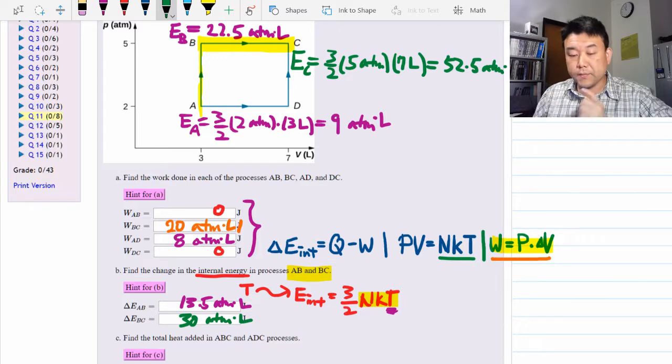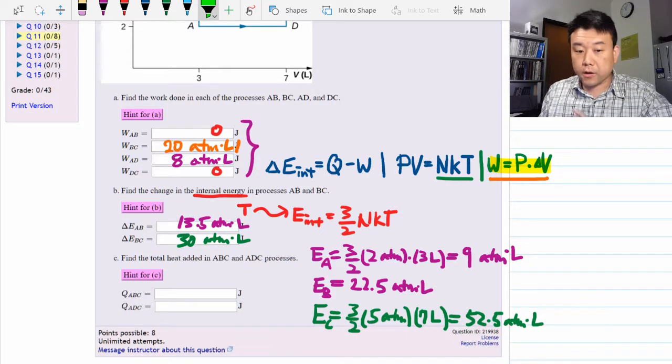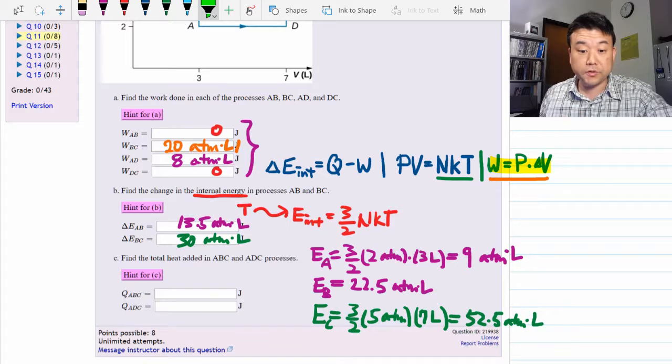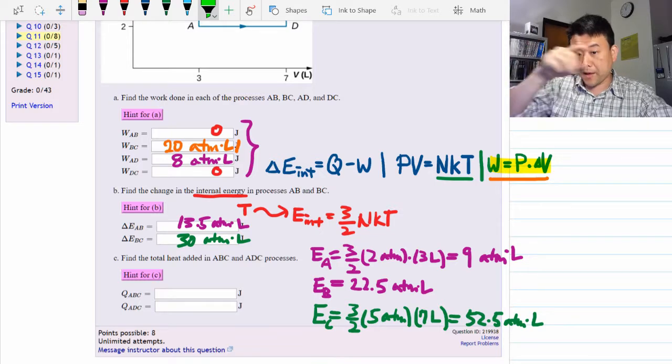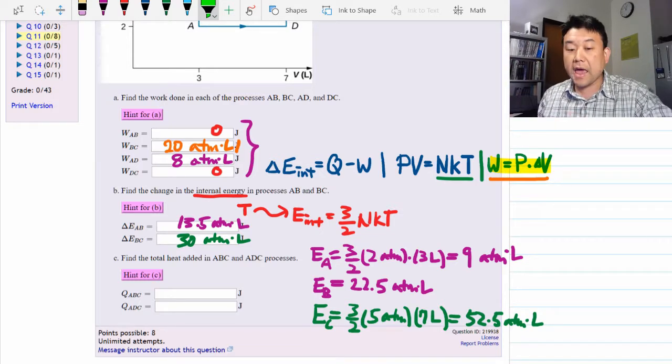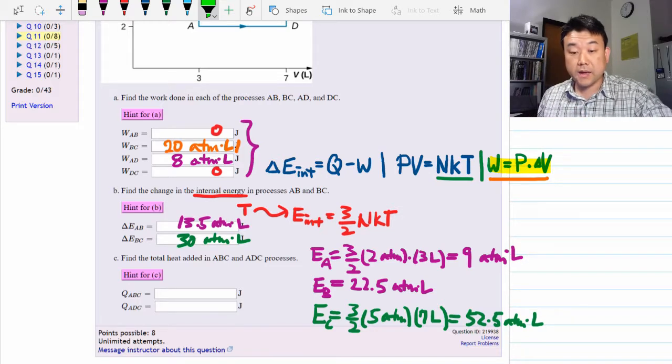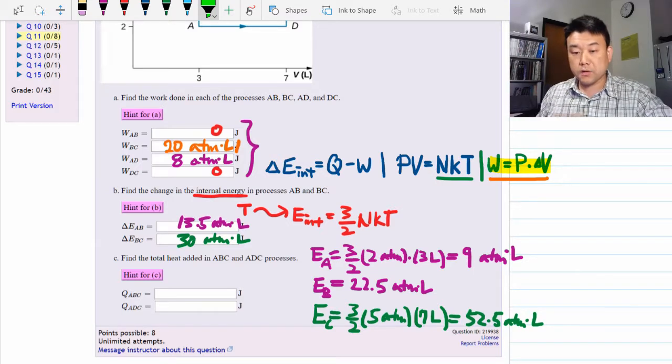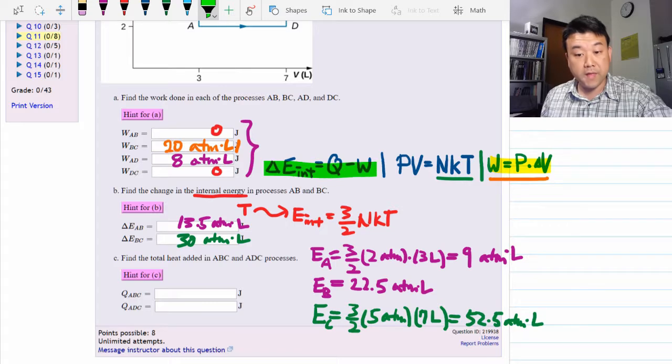Now, all this information we are calculating is going to be needed for the next part. All right. So part C is where all this work was building up to. It says find the total heat added in ABC—that's the upper path—and the ADC—that's the lower path ADC processes. And we have worked out all the pieces we need for ABC path. So let me show you how it's put together. So what we are going to use here is the first law of thermodynamics.